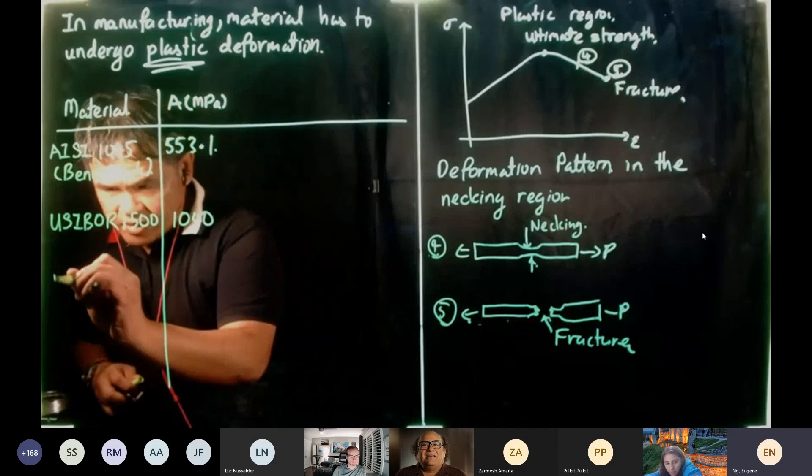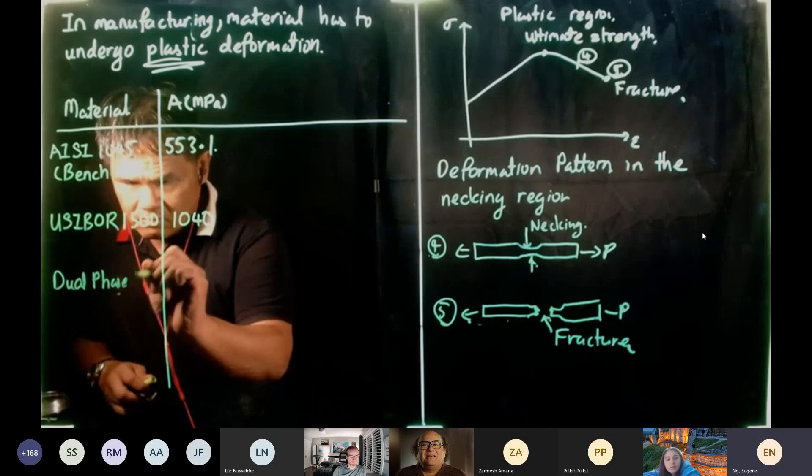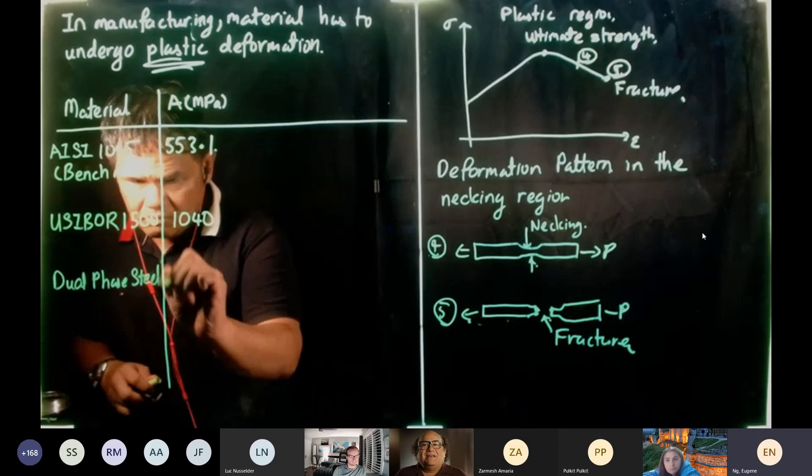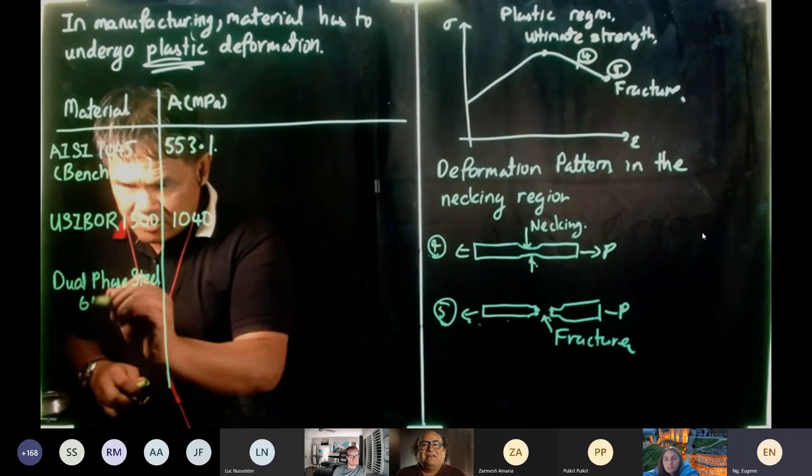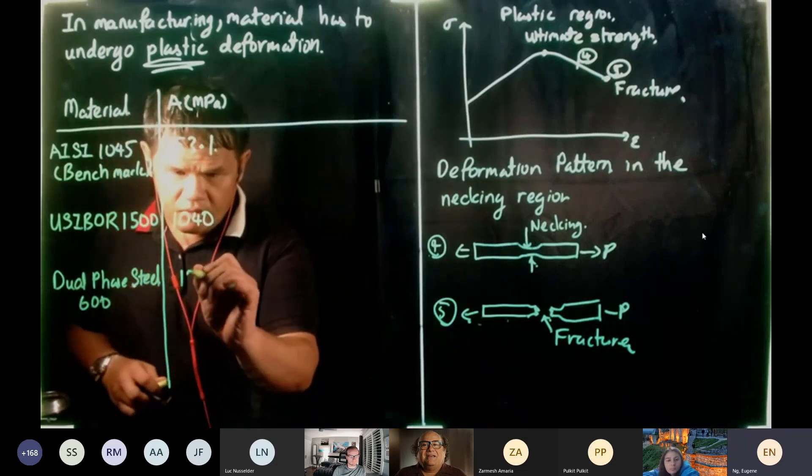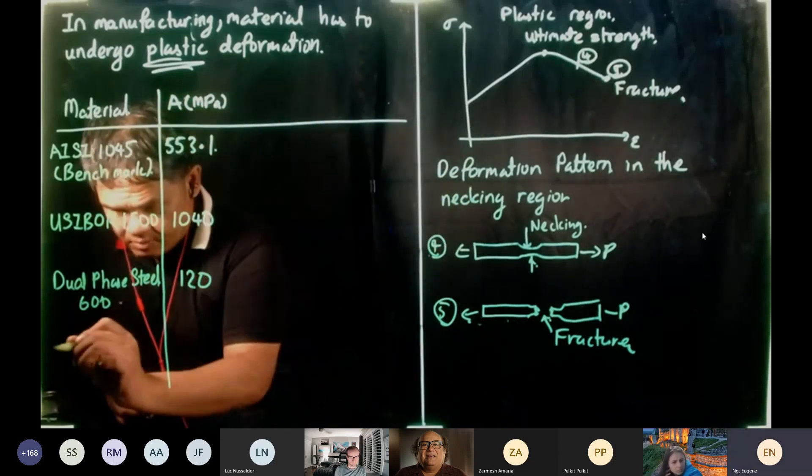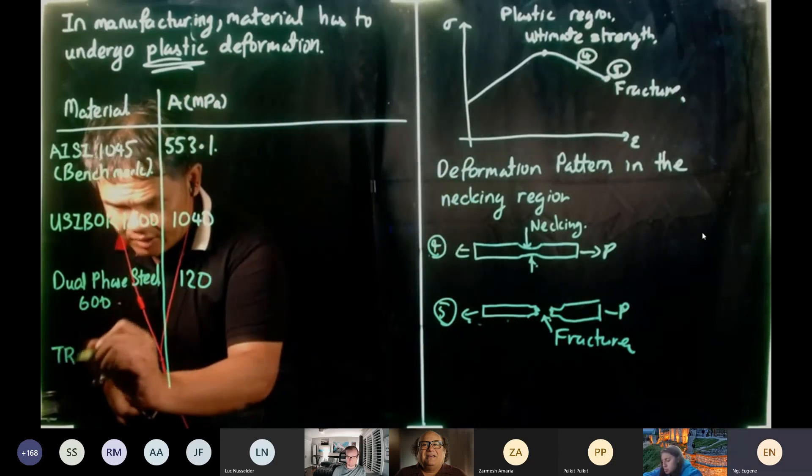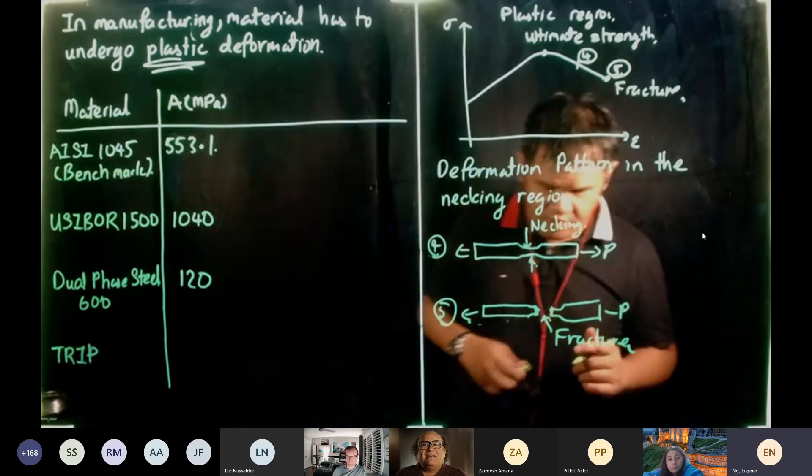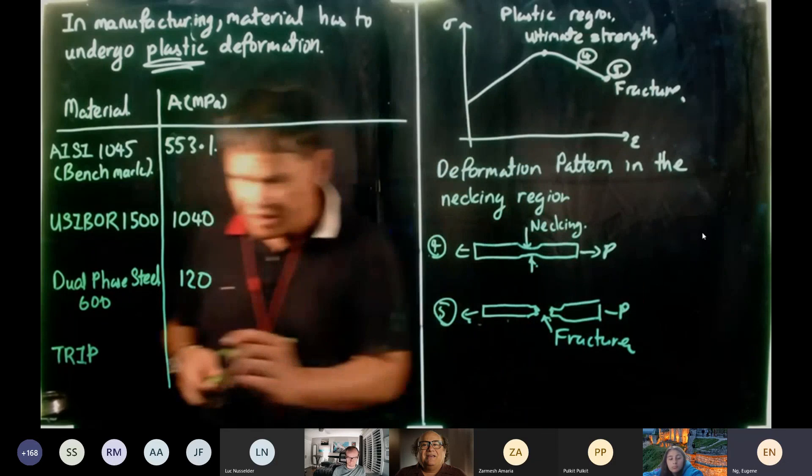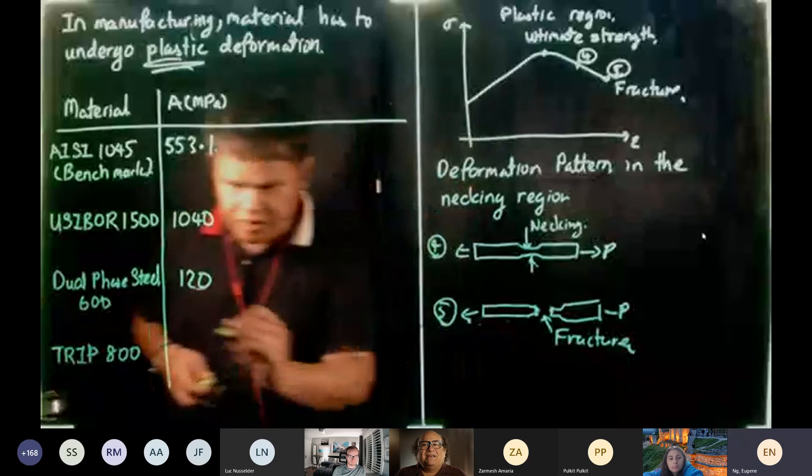Then I'm going to introduce you to another material which is US Steel. It's a low carbon steel or high strength, I'll tell you more details later on. And it has 1040. So it's twice of that of 1045. Then I have dual phase steel 600 series, this is running at 120. And then I have TRIP steel, T-R-I-P. I'll explain to you in two weeks time. We will look at the material science aspect of all this material, but I want you to just look at these numbers first. This is 800, and this is at 412.